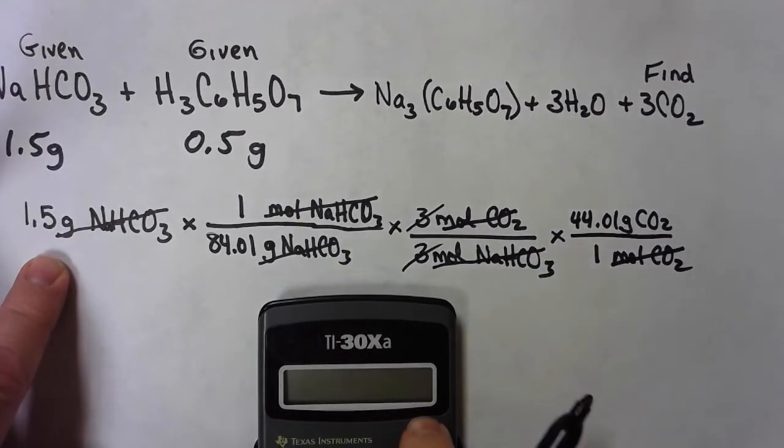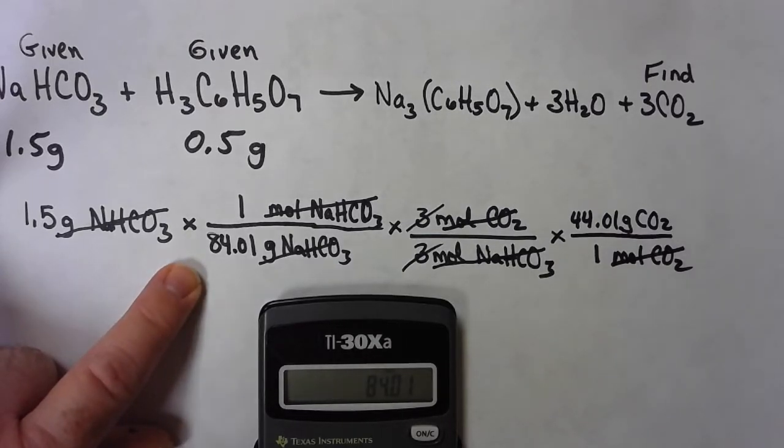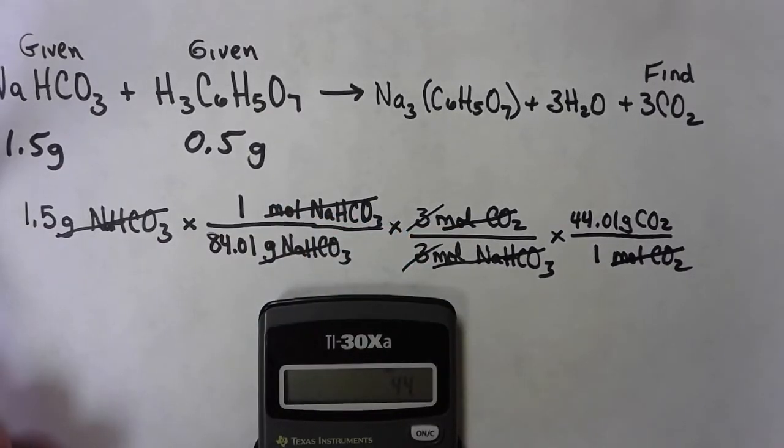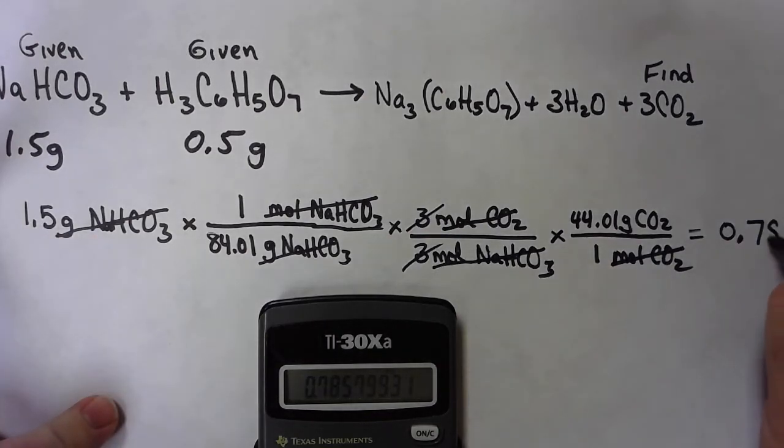So let's see what happens when I punch those numbers into my calculator. 1.5 divided by 84.01 times 44.01 equals 0.785799... I only have two digits in my first number here. I'd like to have two digits in my final answer.